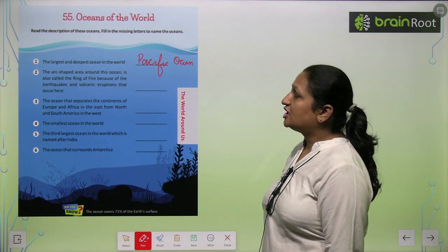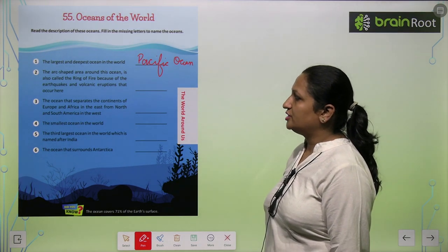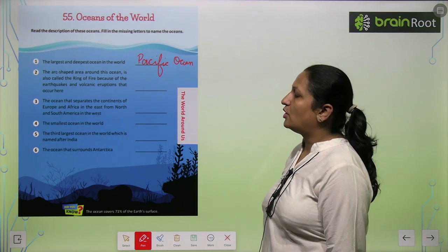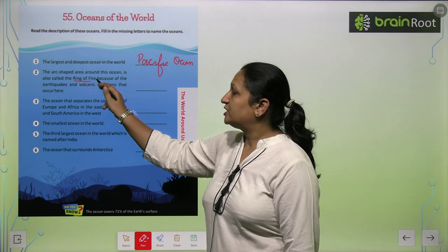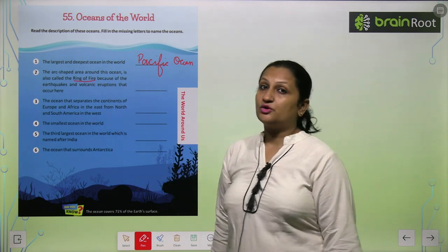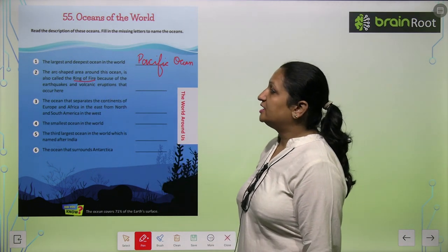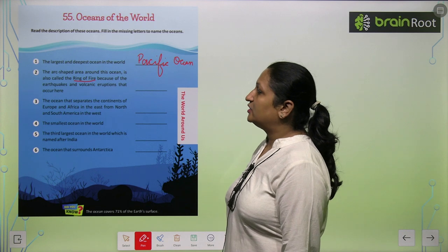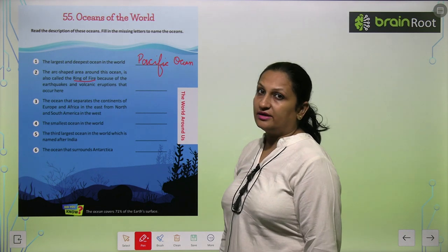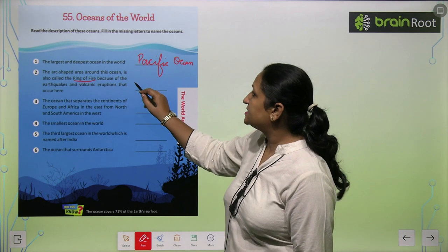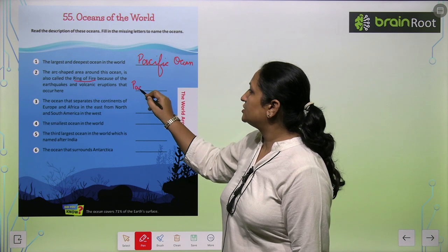The arc-shaped area around this ocean is also called the Ring of Fire. So, this is also which ocean? Because of the earthquakes and volcanic eruptions that occur here — again, this is the Pacific Ocean.